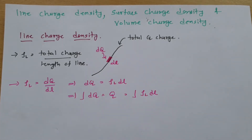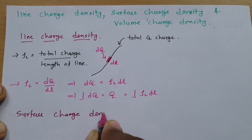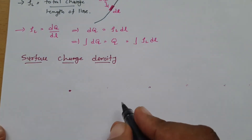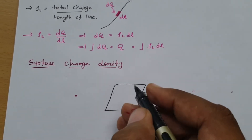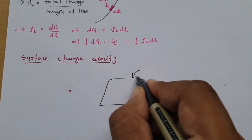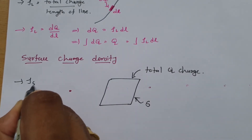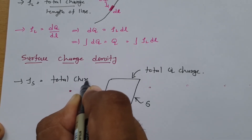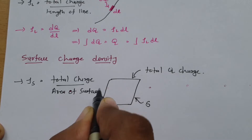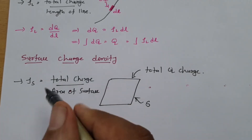Now I'll explain surface charge. For surface charge, consider a surface S. If we deposit total charge Q on this surface, then surface charge density ρS equals total charge divided by the area of the surface. That is how we calculate surface charge density.